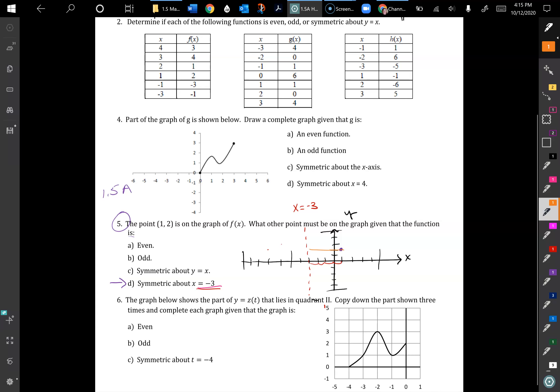It would still have y equals 2, but it would have to be 4 over this way: 1, 2, 3, 4. So that would give us a negative 7 for our x value. So I would have to put a point at (-7, 2) if it's reflecting or symmetric about x equals negative 3. That point would also have to be on the graph.